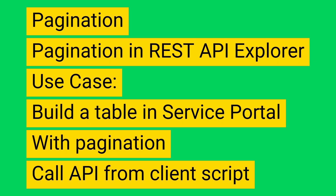In this video we'll discuss pagination in integration. We cannot bring all the data in one API call — we need to bring the data in multiple chunks through pagination. For example, if there are 1000 records in the target table, we can set a page size of 100 and make 10 API calls. We'll see pagination in REST API Explorer first, then in Service Portal, and finally build a UI to bring incidents from the target instance with pagination based on page size.